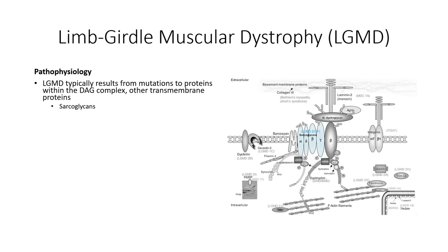Other mutations involve additional transmembrane proteins. Dysferlin and caveolin-3 form a transmembrane complex that is critical in the docking and fusion of repair vesicles following membrane damage. Mutation to either of these proteins will result in different forms of limb-girdle muscular dystrophy.